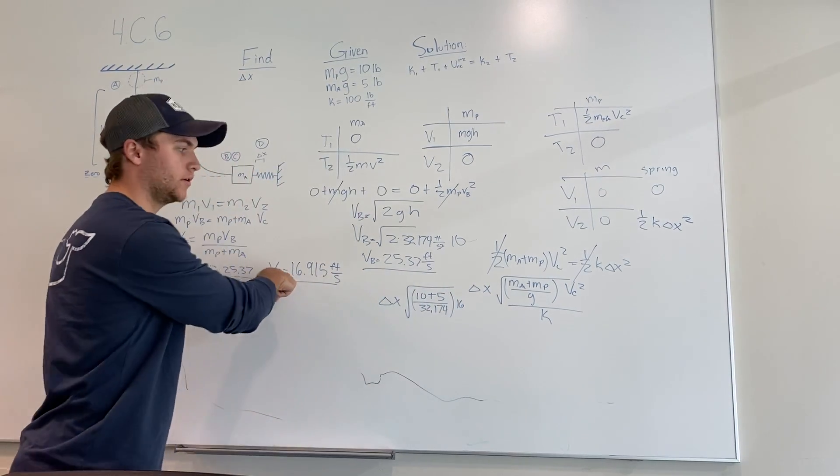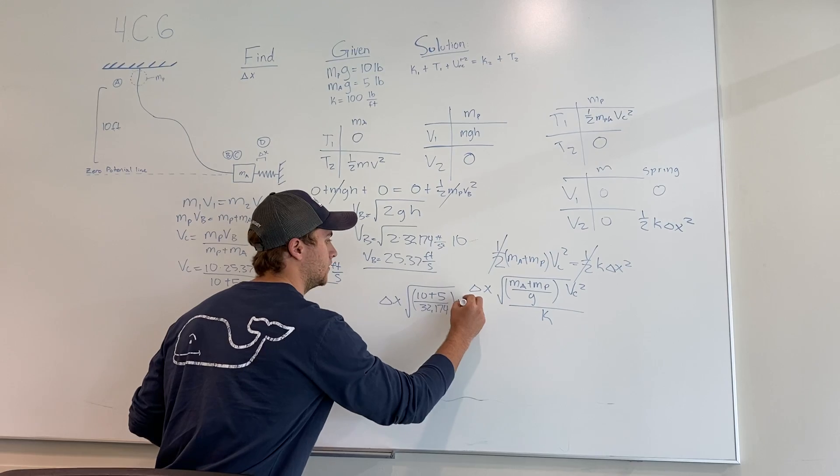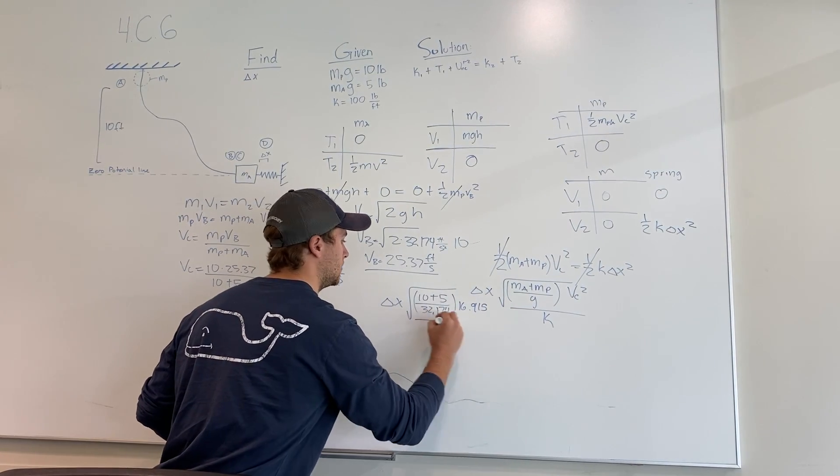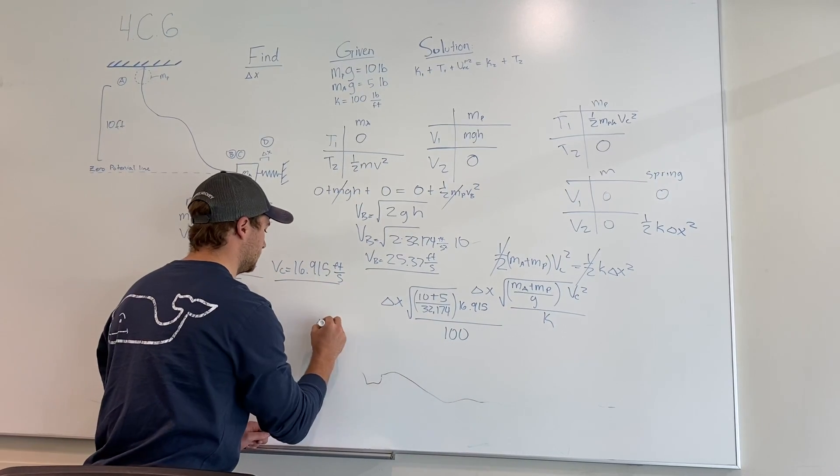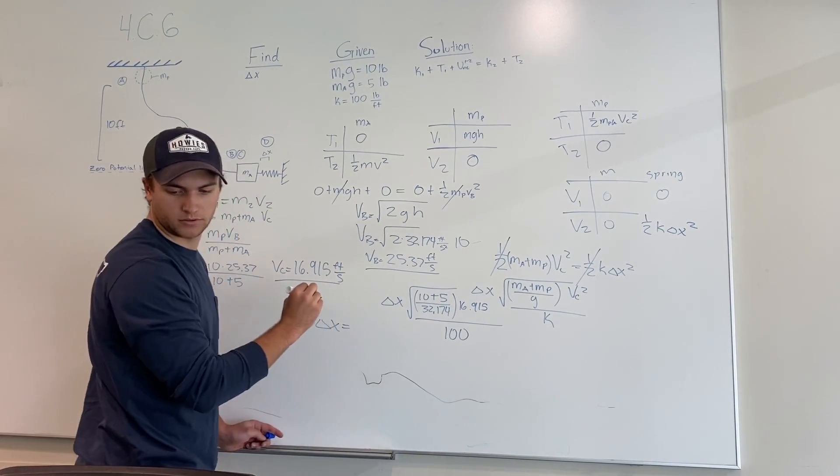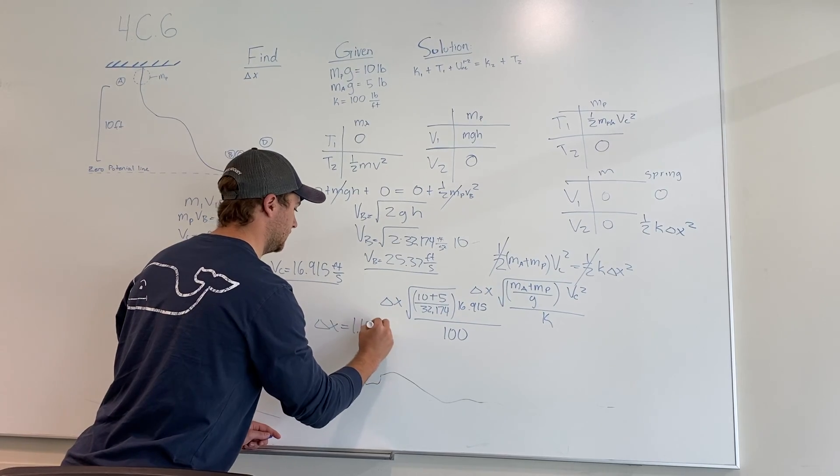And when you plug all those numbers in, you're going to use the 16.915 for Vc divided by the 100, which is the spring constant. Delta x equals 1.15 feet.